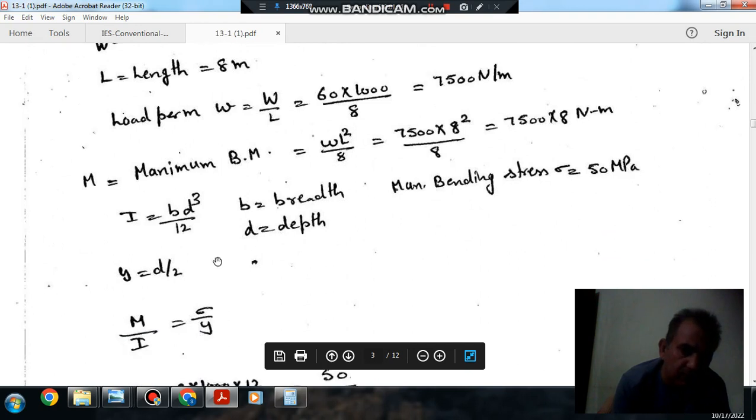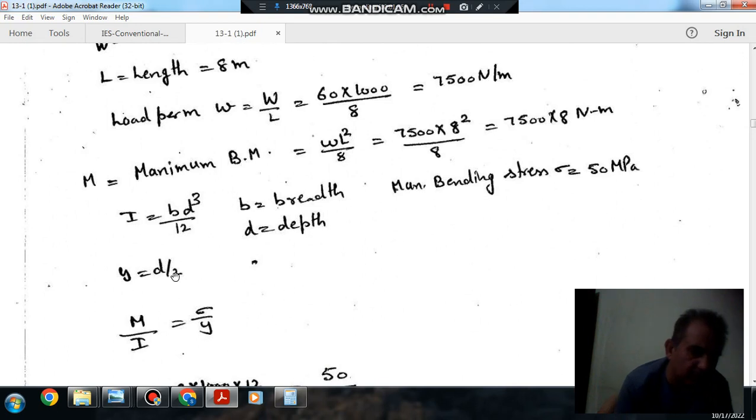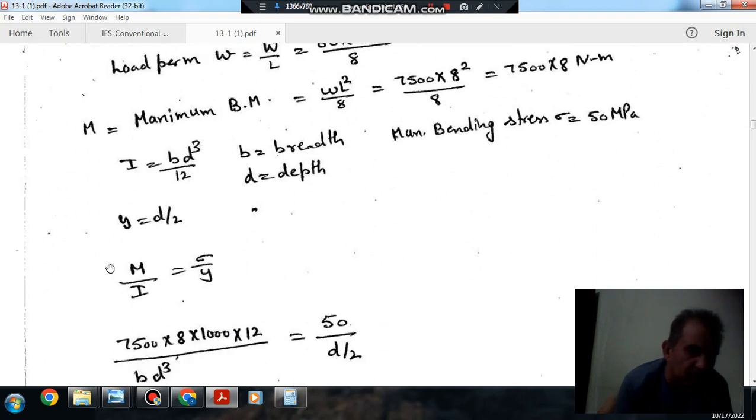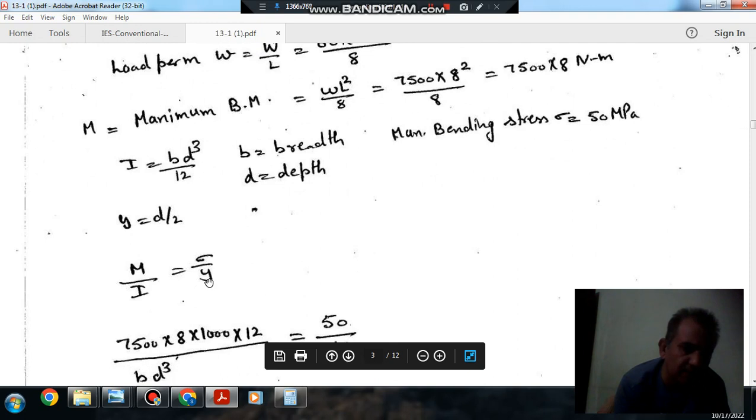And maximum bending stress will occur at the outer fiber which is at a distance D by 2 from neutral axis. So using bending equation M by I equals sigma by Y, putting M is equal to 75000 into 8 into 1000, taking it in Nm.